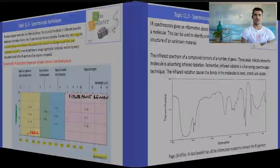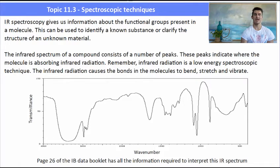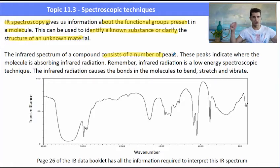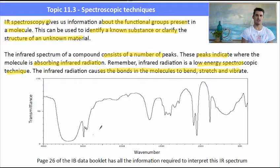So for IR, we want to work out what functional groups are present in the molecule, and this helps us to identify an unknown compound. The spectrum consists of a number of peaks, and these peaks indicate where the molecule is absorbing the infrared radiation, and the types of bending and stretching that are happening. Different parts of the spectrum show us different functional groups. So here we have a spectrum, and I can see that there are a number of peaks and troughs in the spectrum. What we're interested in is the ones that we would describe as medium and strong.